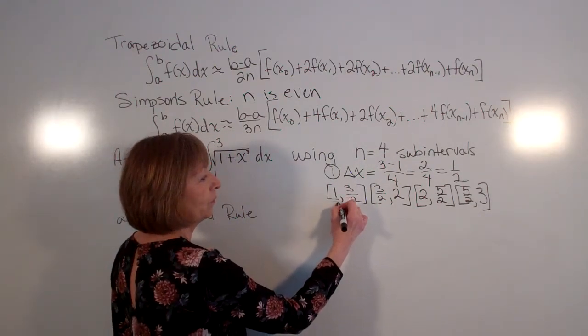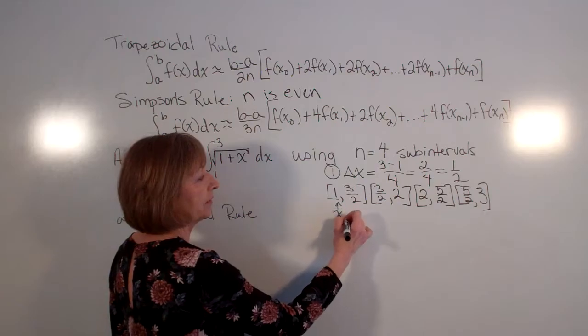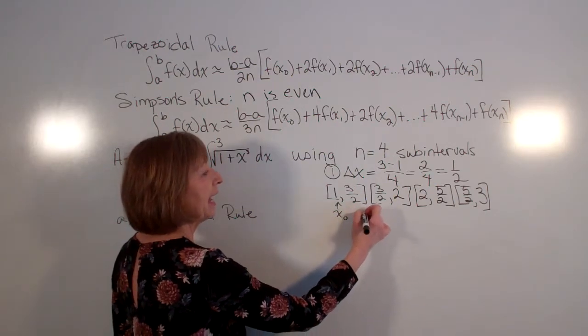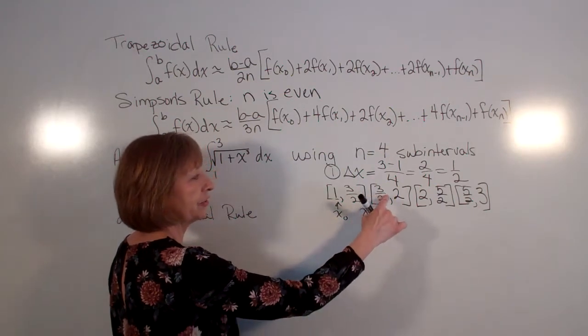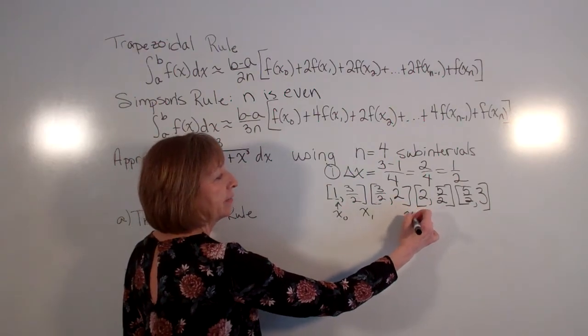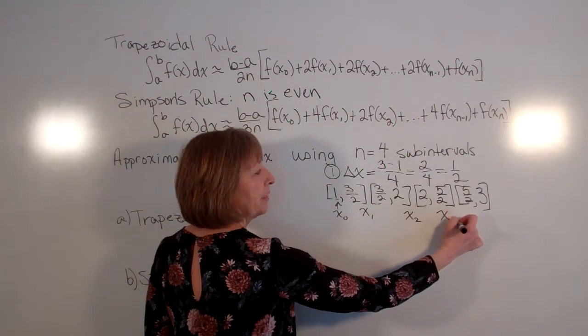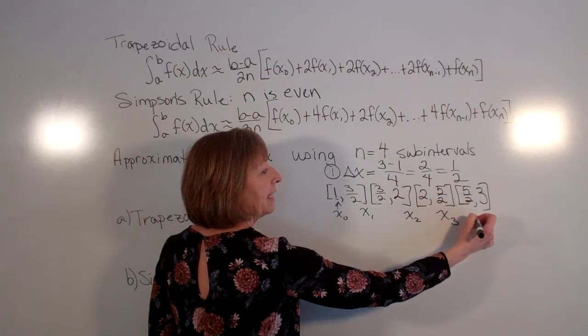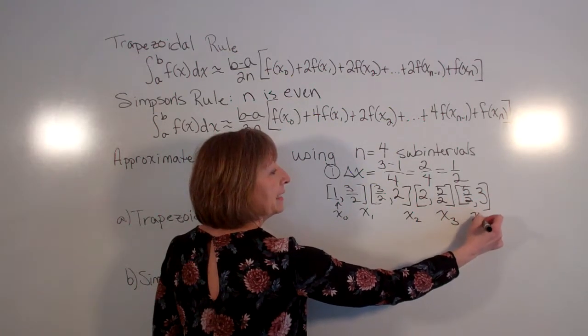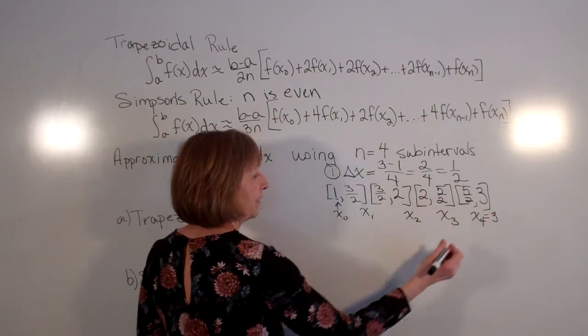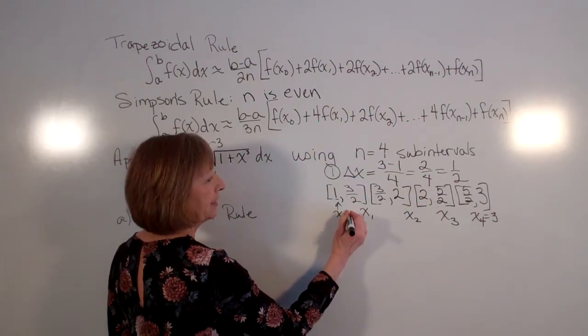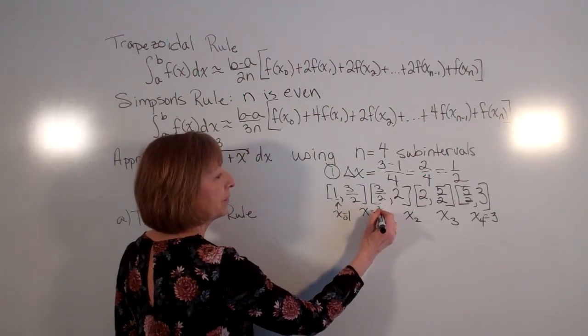So my a is my x sub 0, and then x sub 1 is your 3 halves, x sub 2 is your 2, x sub 3 is your 5 halves, and x sub 4 is b, which in this case is my 3. So I'll just write these under here as well so that you can see them.